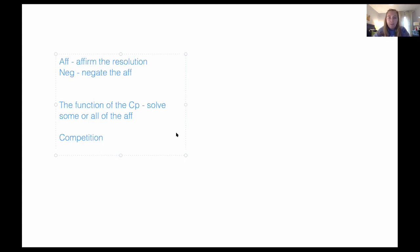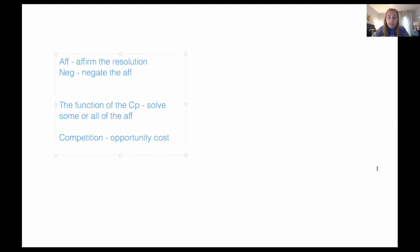Competition basically means that there is a real opportunity cost between doing the plan and doing the counter plan. The neg has to demonstrate with evidence that the judge must choose between the world of the aff or the counter plan. For example, if the plan abolishes the police via Congress and the counter plan changes mandatory minimum sentencing, this wouldn't be competitive because there's no opportunity cost — you could do both at the same time. However, if the counter plan is that states should enact the plan instead of Congress, and the neg has a reason why Congress doing the plan is bad, then this is an example of a real cost.